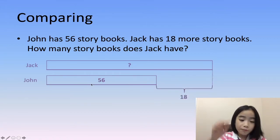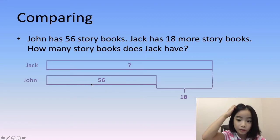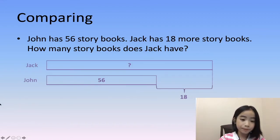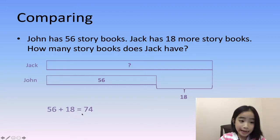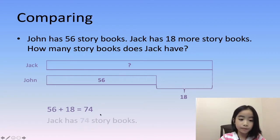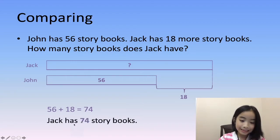So we know that this is an addition problem. 56 plus 18 gives us the total number of storybooks Jack has, which is 74. So Jack has 74 storybooks.